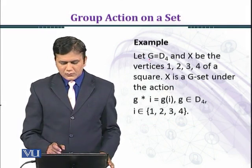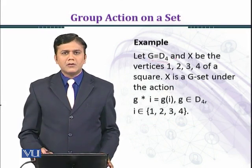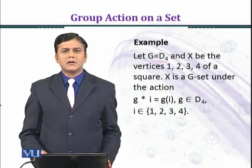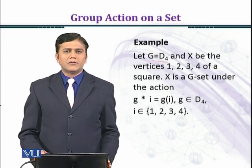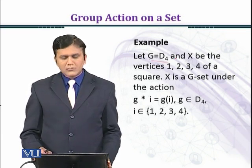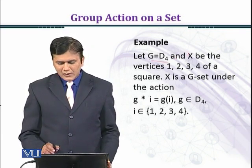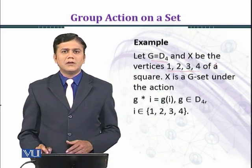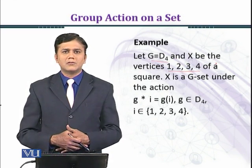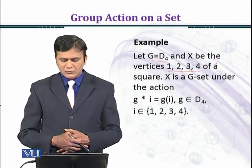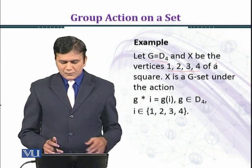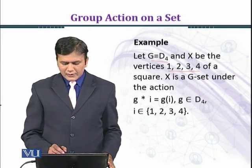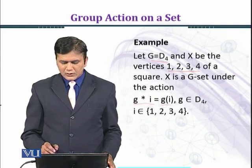Let's consider another example. Let G = D4, the fourth dihedral group — اس سے پہلے ہم یہ study کر چکے ہیں، square کی symmetries دیکھ چکے ہیں اور اس میں total 8 elements ہیں۔ Let X be the vertices {1, 2, 3, 4} of the square۔ Then X is a G-set under the action g★i = g(i).